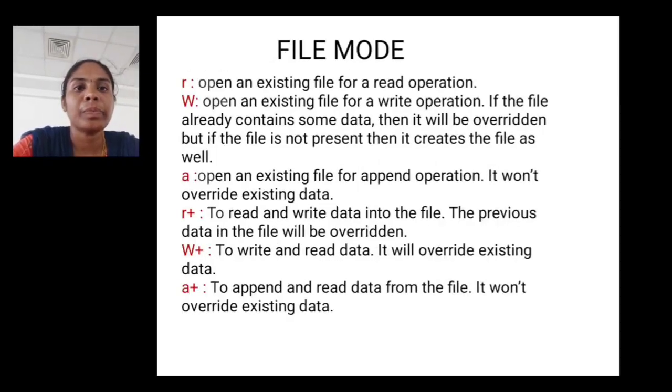File name. r: open an existing file for a read operation. w: open an existing file for a writing operation. If the file already contains some data, data will be overwritten, but if the file is not present, then it creates the file as well. a: open an existing file for appending operation. It will not overwrite existing data. r+: to read and write data into file. w+: to write and read data. a+: to append and read data from a file. It will not overwrite existing data.